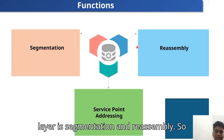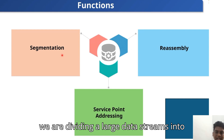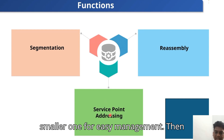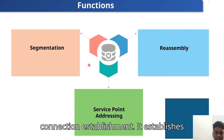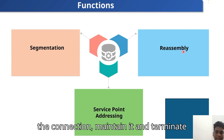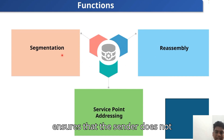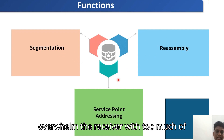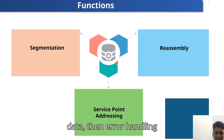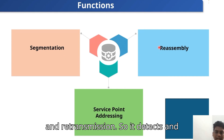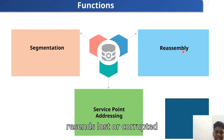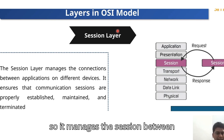Key functions of the Transport layer include: Segmentation and reassembly — dividing large data streams into smaller segments for easy management; Connection establishment — establishing, maintaining, and terminating connections between devices; Flow control — ensuring the sender does not overwhelm the receiver; and Error handling and retransmission — detecting and resending lost or corrupted packets.